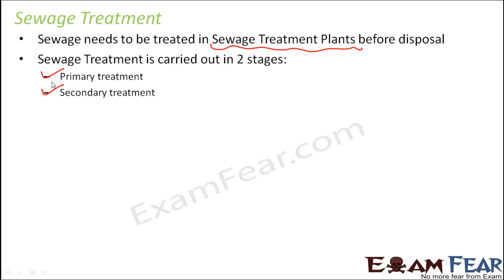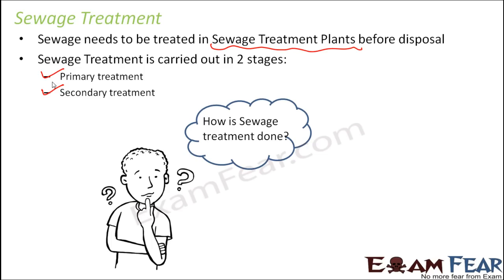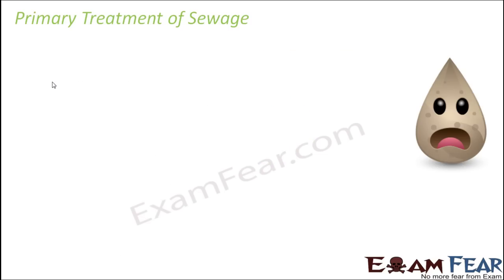Once the sewage is treated, it becomes less harmful and can then be directly disposed into water bodies without causing major water pollution. The question is: how exactly is sewage treatment done? What happens in the primary treatment and what happens in the secondary treatment? Let us discuss them one by one, starting with primary treatment.